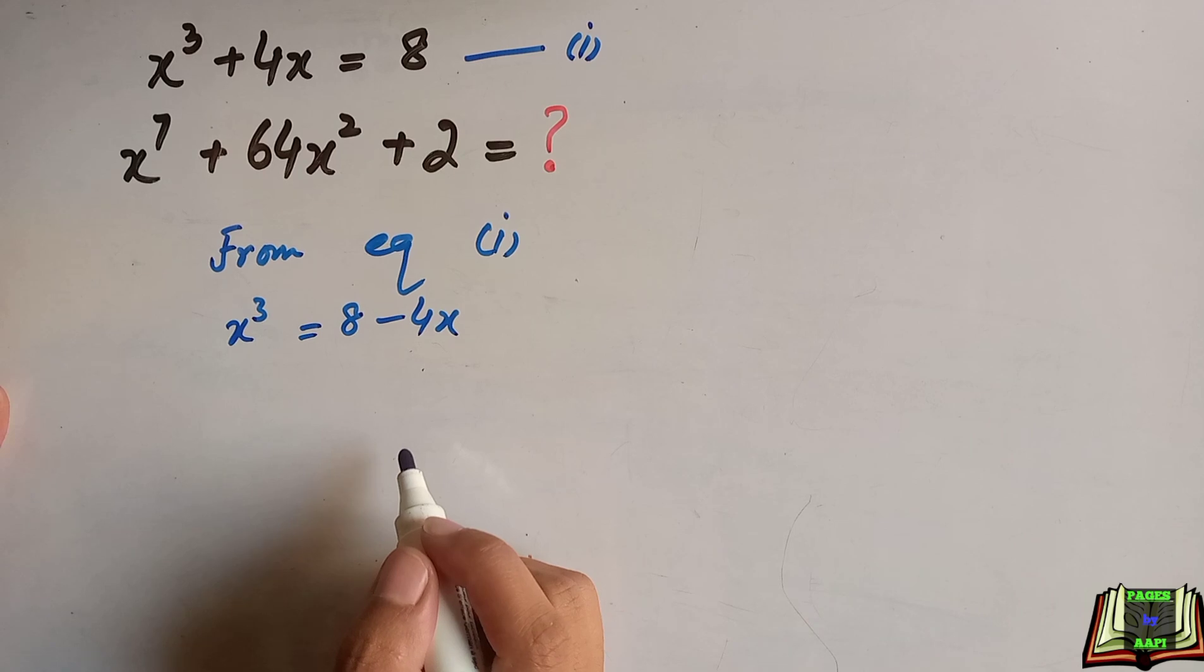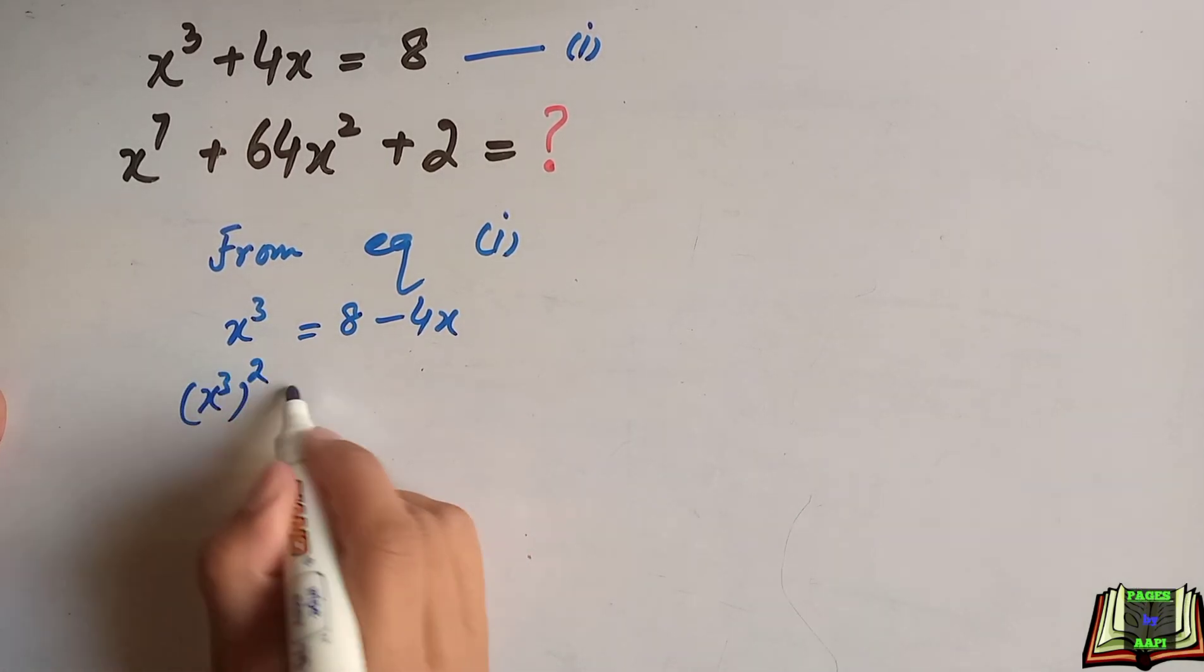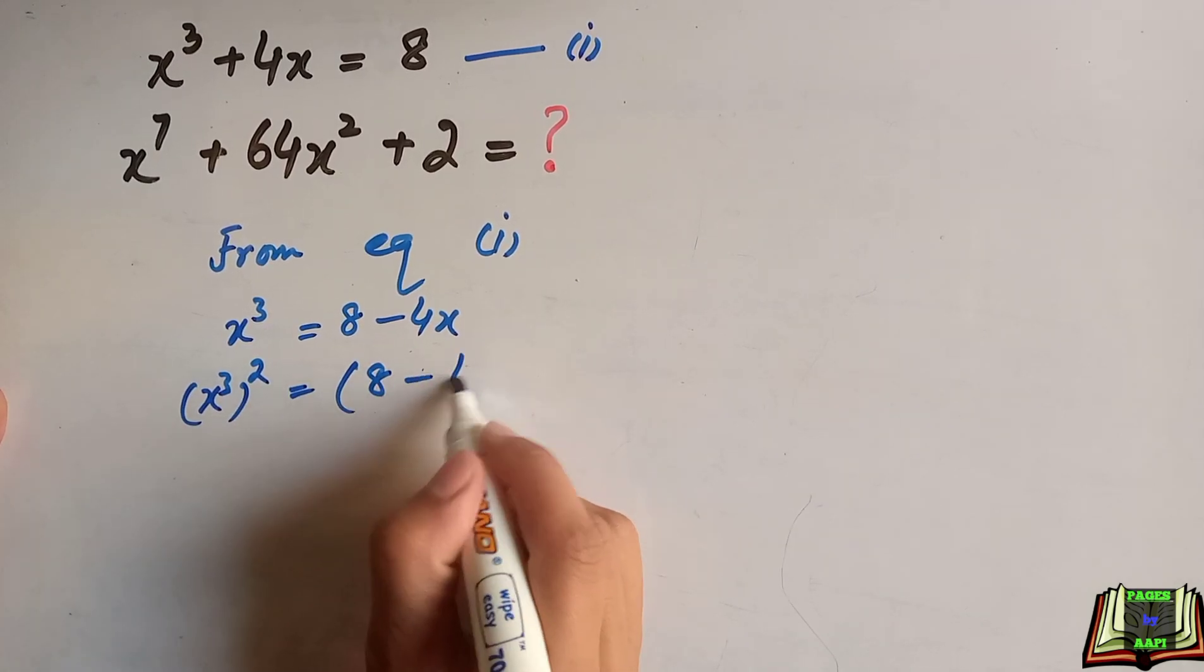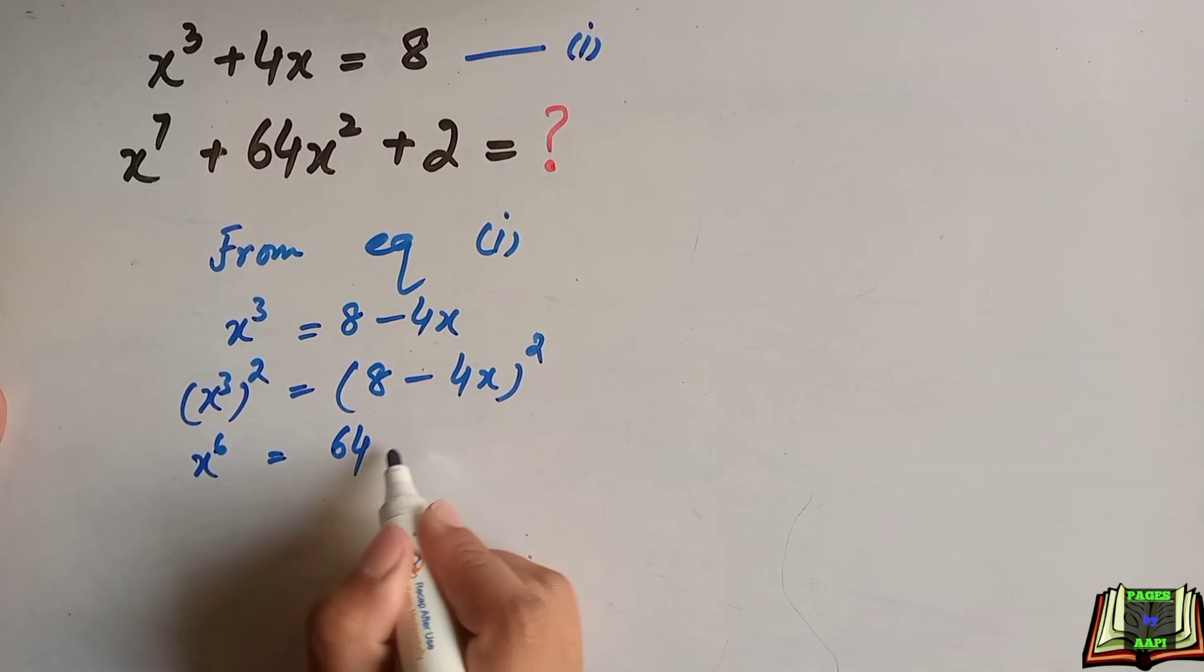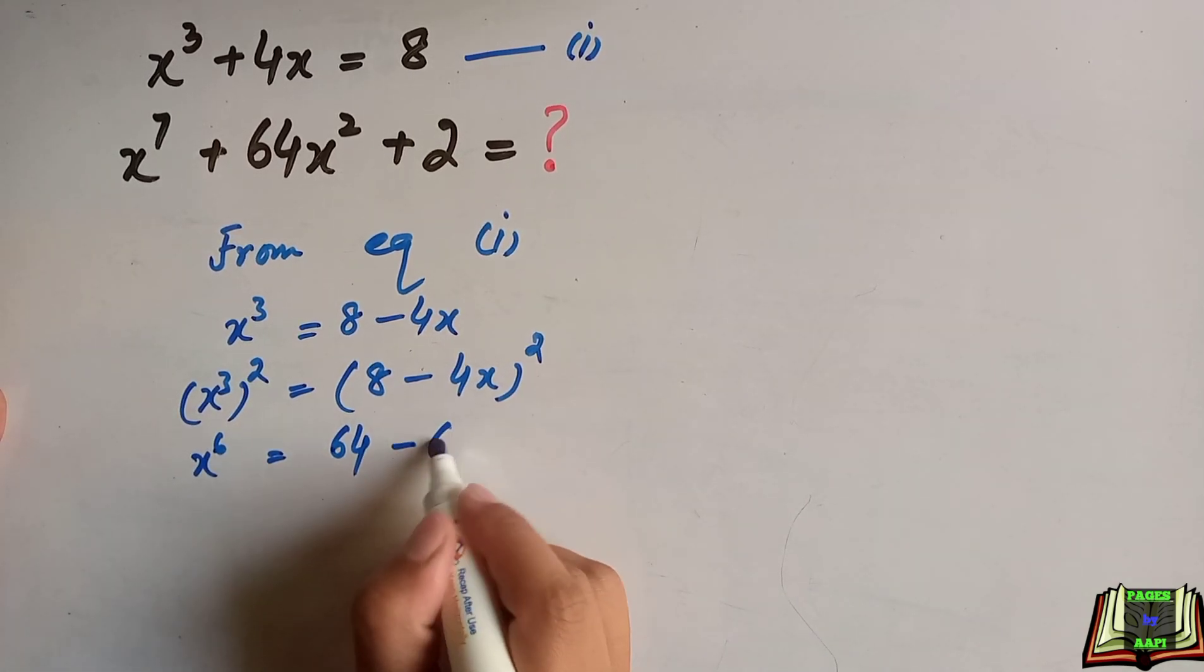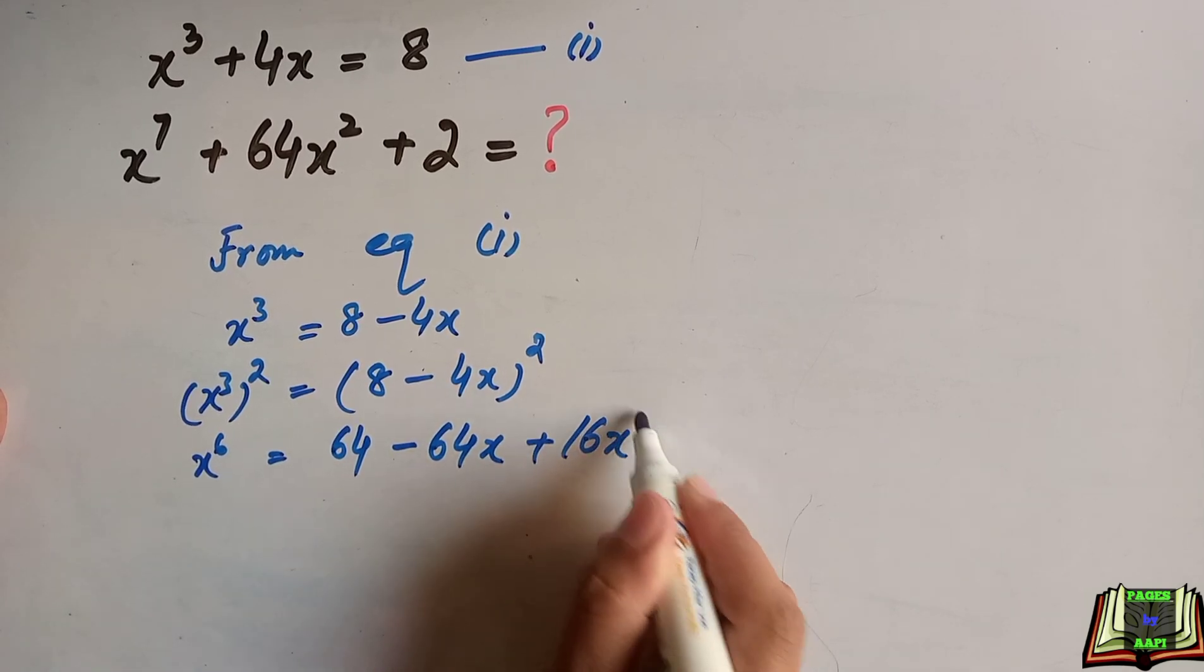In the next step, we'll square both sides of this equation. Then x⁶ = 64 - 64x + 16x².